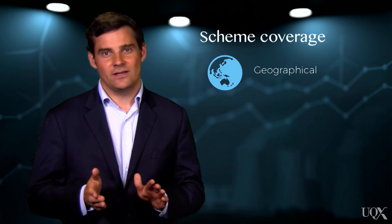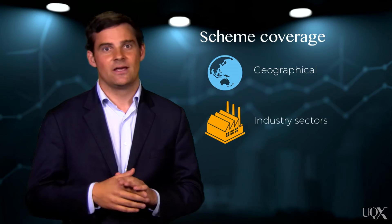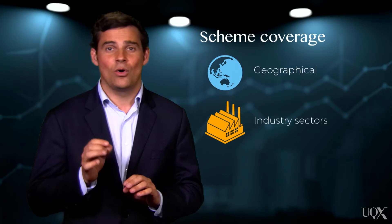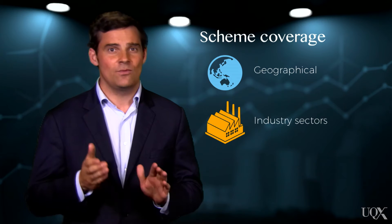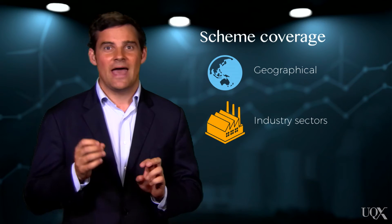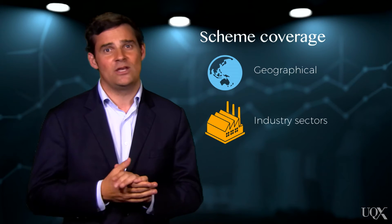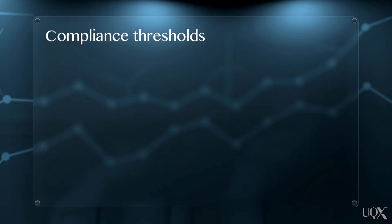Within this geographical boundary, an ETS can also cover one or more industry sectors, such as manufacturing, mining, power generation, oil refining and transport. If your company has a facility within a geographical area and industry sector covered by an ETS, this doesn't automatically mean your company has an ETS compliance obligation. This is because most schemes also have an emissions compliance threshold and only cover companies or facilities that exceed this.